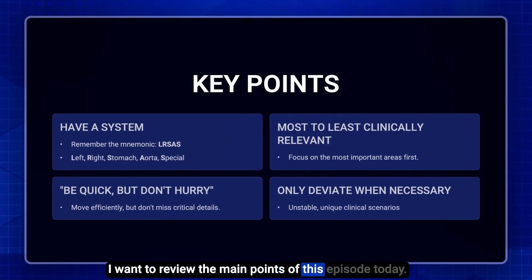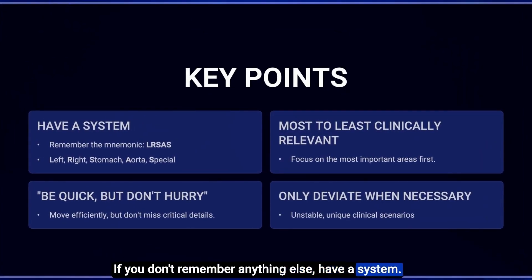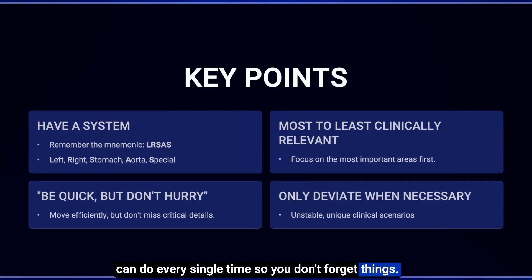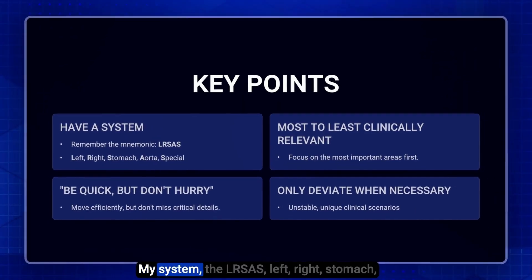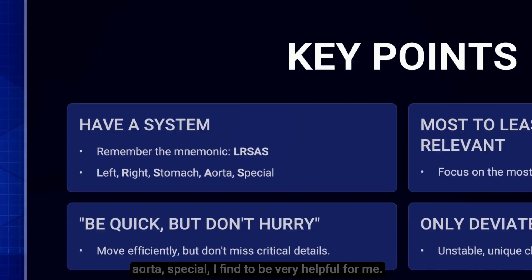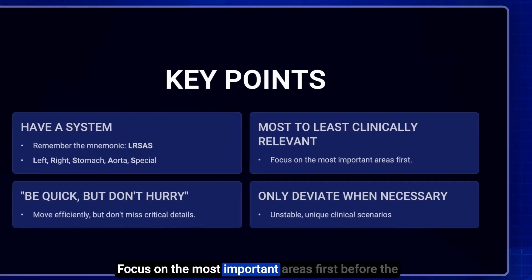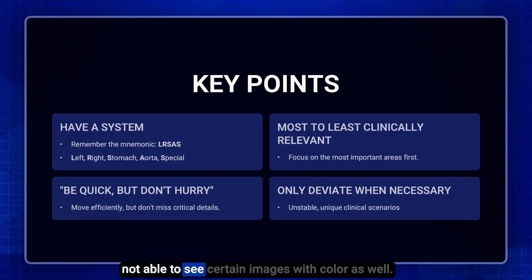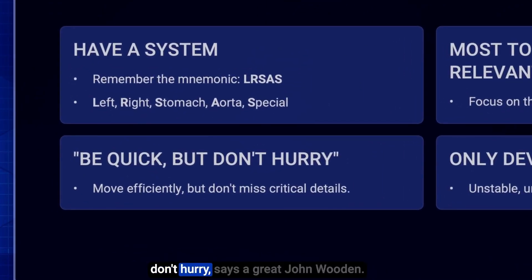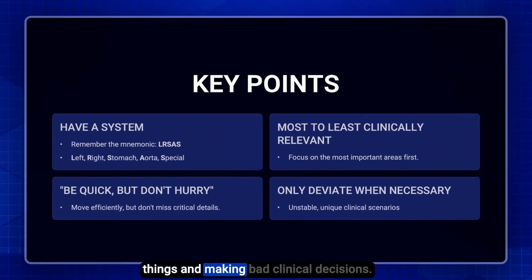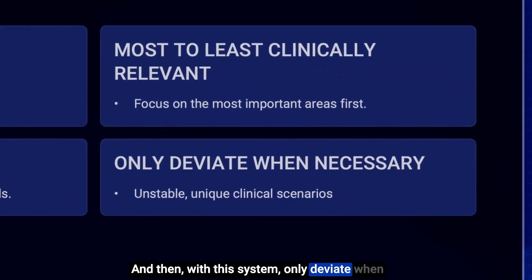To review the main points: if you don't remember anything else, have a system. You can take this one and adopt it as your own, but have a system you can do every single time so you don't forget things — be systematic, thorough, and efficient. My system, L-R-S-A-S: Left, Right, Stomach, Aorta, Special. Go from the most to the least clinically relevant findings. Focus on the most important areas first before the surgeon starts bovying and you're no longer able to see certain images. Be quick, but don't hurry — your job is to be accurate. Don't hurry so much that you're missing things and making bad clinical decisions. Only deviate from this system when necessary, such as when a patient is unstable or there are unique clinical scenarios.